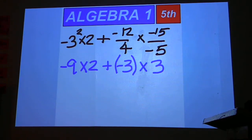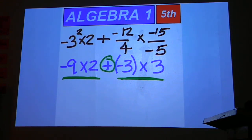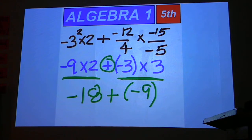So, we'll go back and do multiplication here, and then there, and then add the results together. Negative 9 times 2 is negative 18, and negative 3 times 3 is negative 9.